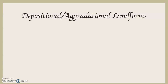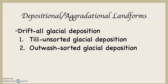All that material that gets plucked and abraded — scooped up and ground away by glaciers — and then transported eventually gets deposited as glacial depositional landforms. Remember, if you have a V-shaped river valley and a glacier goes through it and hollows it out into a big U-shaped trough, all that material that was there gets dropped someplace. Everything deposited by a glacier we call drift.